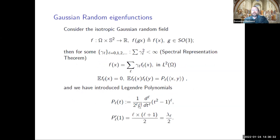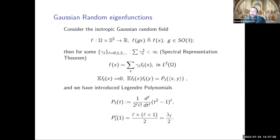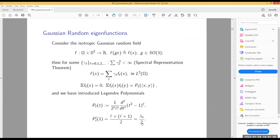If you have a general isotropic Gaussian random field — a mapping from a probability space times the sphere into ℝ, invariant in law with respect to rotations — then by the spectral representation it can be written as a weighted sum of random eigenfunctions times some weights giving the so-called angular power spectrum. Each of these components after normalization is itself a Gaussian random field with zero expected value and covariance given by a Legendre polynomial. The derivative of this covariance at the origin is just the eigenvalue divided by dimension — this will be important later.